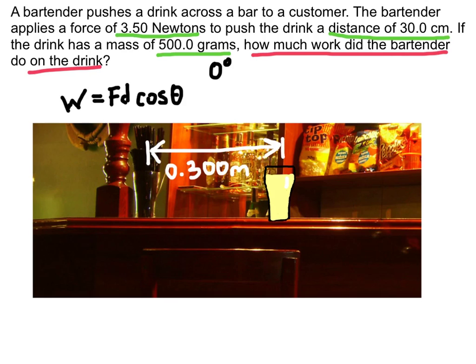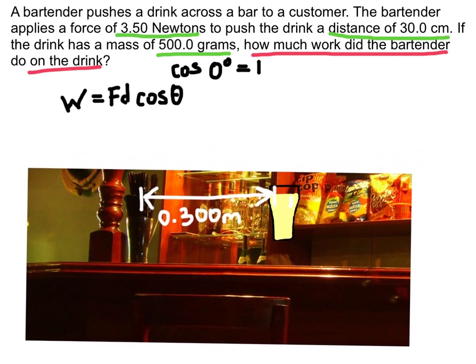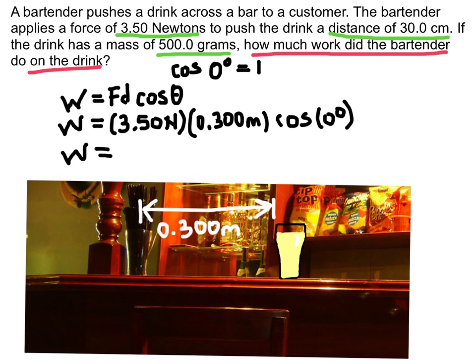Cosine of 0 degrees is equal to 1. So you can see in this case, the angle is not going to have much to do with our final answer. So let's plug in our numbers here so we can solve for this. And when we plug this into our calculator, we end up with a work of 1.05 newton meters.